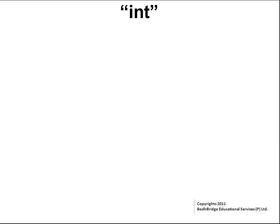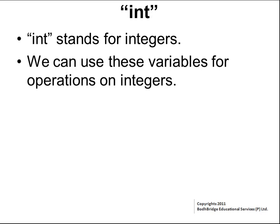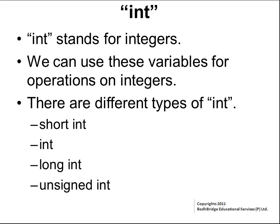Integer data type: int stands for integers. We can use variables of this data type for operations on integers. There are different types of integers: short int, int, long int, and unsigned int. Unsigned int means we can save only unsigned integers in it.